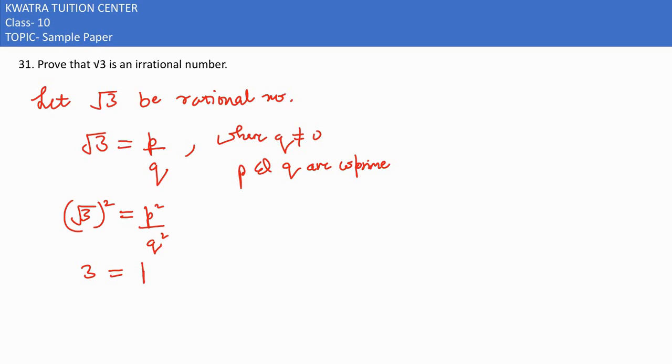3 would be on the left side. Right side, this would be P²/Q². Now what would you do? Take Q² to the left side, and 3Q² = P².